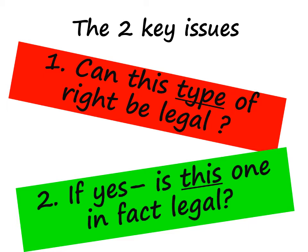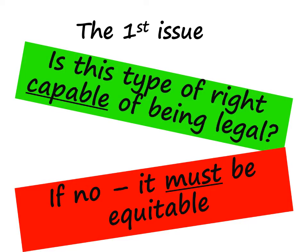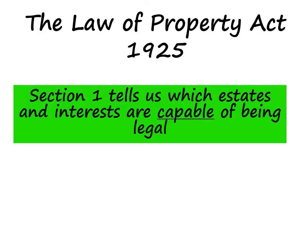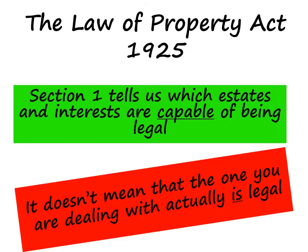For example, if you have a right of way, this is a form of property right known as an easement. So you would first check: can an easement be legal, or can it only ever be equitable? And if easements can be legal, is this particular easement legal or equitable? The first issue we're going to look at is whether this type of property right is capable of being legal, because if it isn't, then it's equitable. We need to look at Section 1 of the Law of Property Act 1925, which tells us which rights are capable of being legal — but remember, just because a right is capable of being legal doesn't mean that the one you're dealing with actually is.